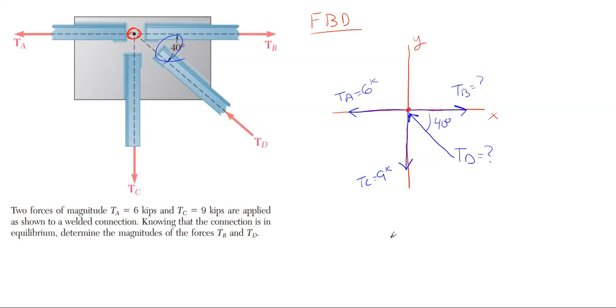After finishing your free body diagram with all your known and unknown forces and angles, what we're going to have to do to find TB and TD is sum all forces in the X equal to zero and sum all the vertical forces in the Y to be zero.